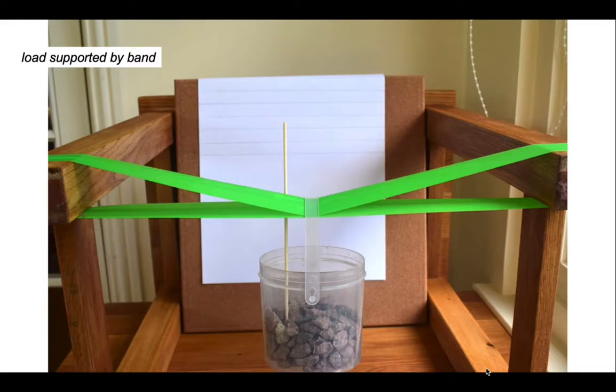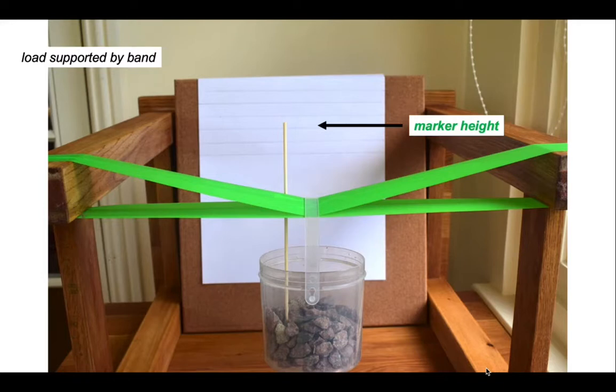So let's support it in the elastic band. That beaker of pebbles has pulled down the elastic band, creating a flexural depression. And we can see how far down the beaker has subsided by looking at the top of that skewer there. So this is our marker height.